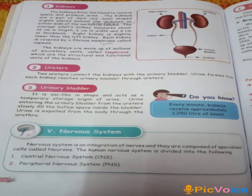The kidneys are 12 cm in length, 6 cm in width and 3 cm in thickness. The right kidney is slightly lower than the left kidney. Each kidney is covered by a fibrous membrane called the capsule. The kidneys are made up of millions of excretory units called nephrons, which are the structural and functional units of the kidneys.